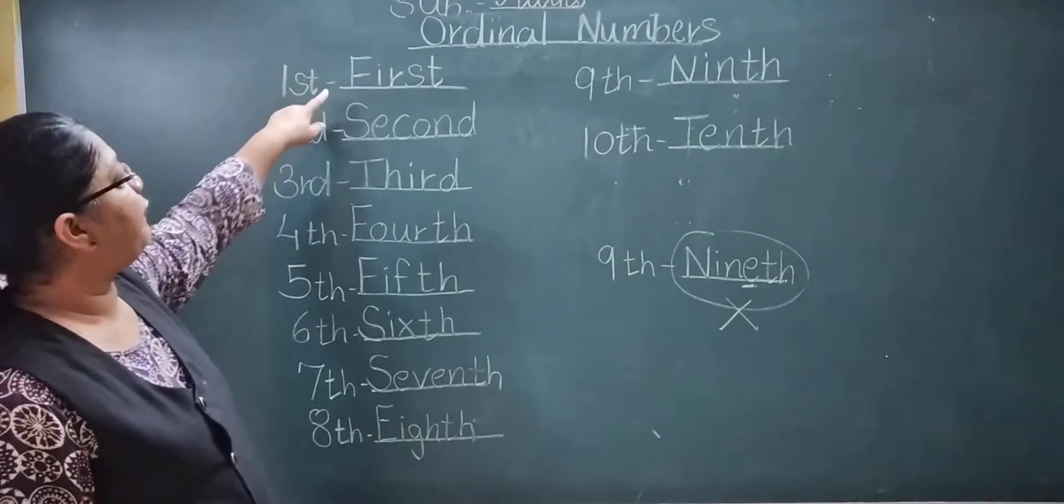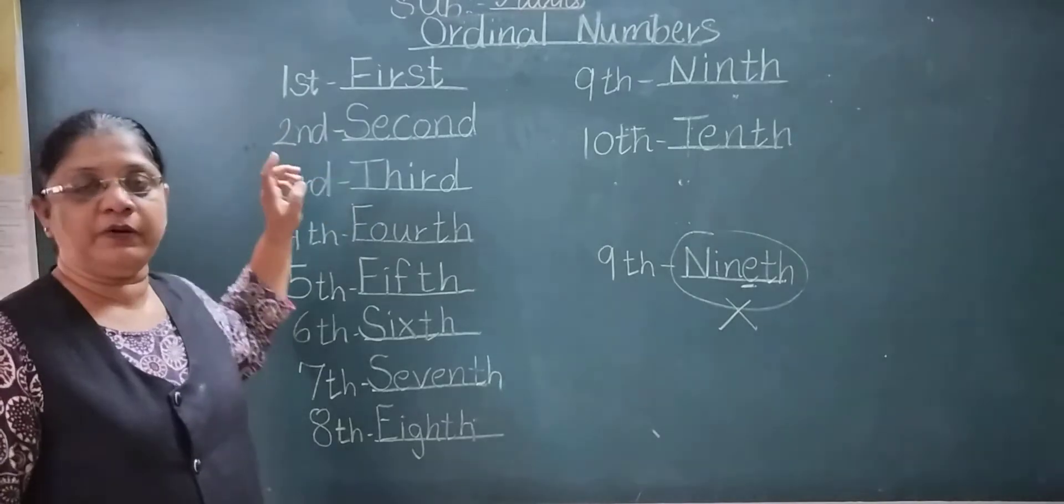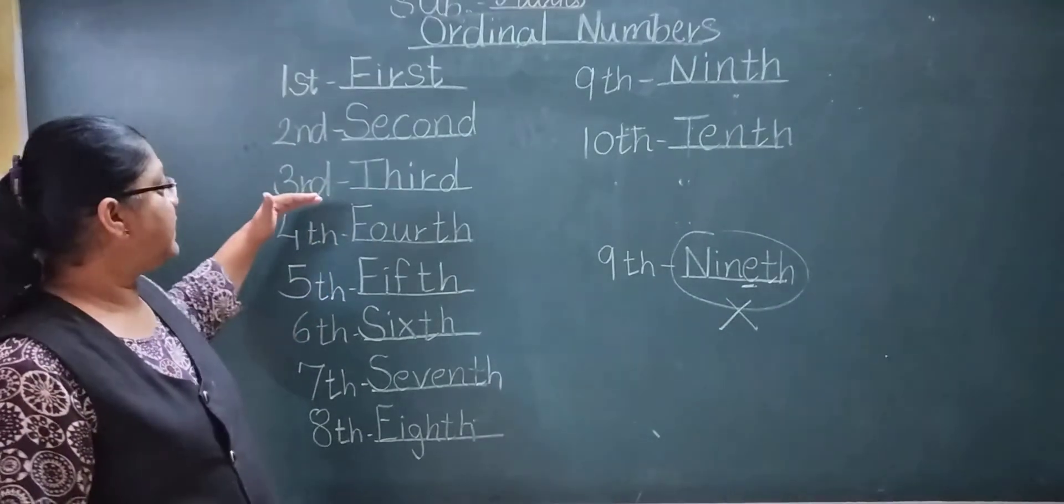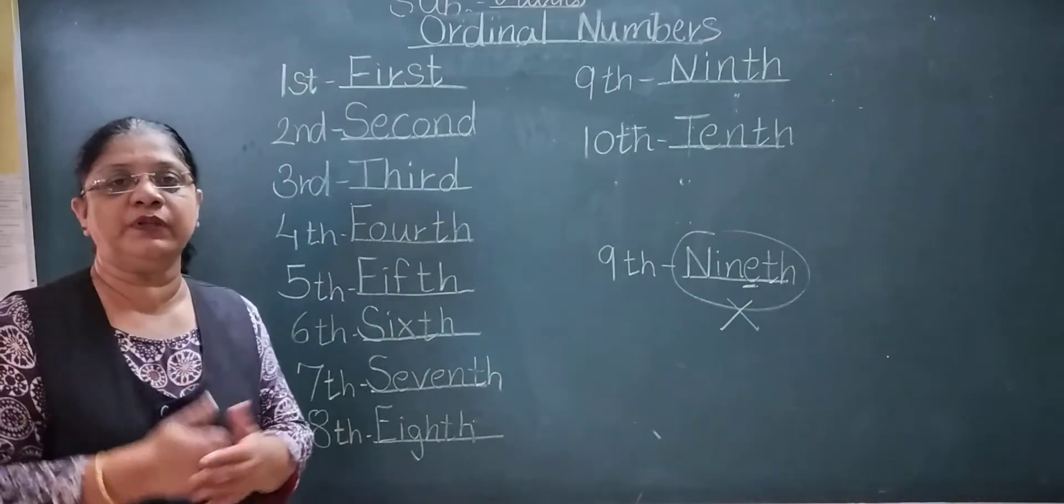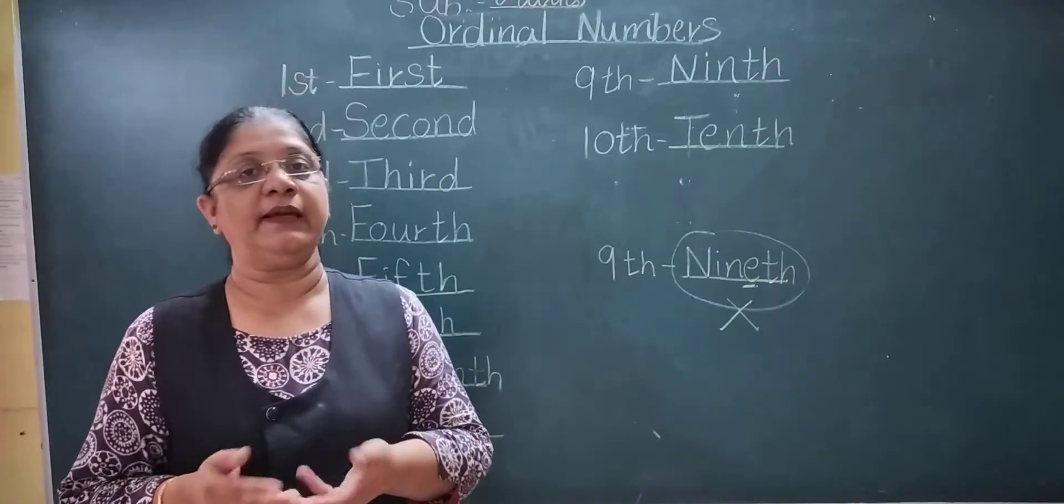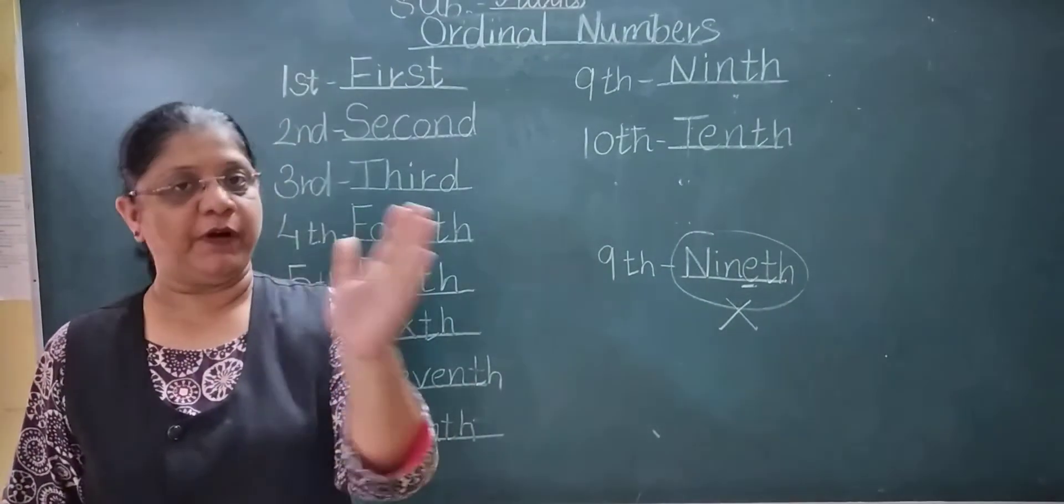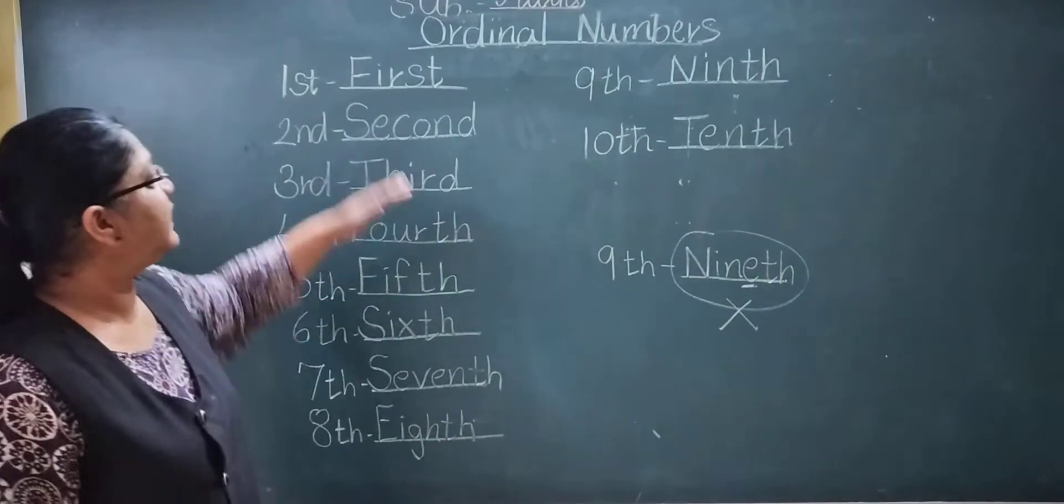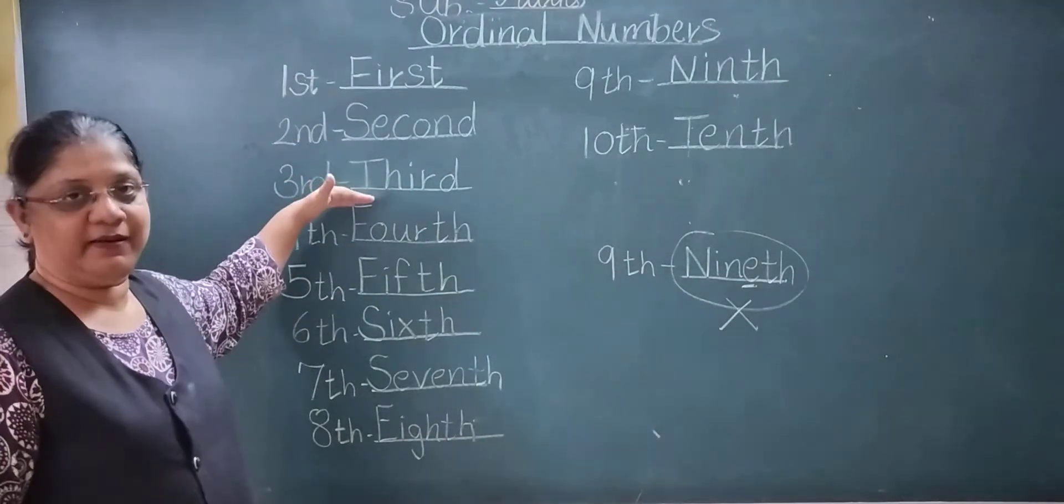See here, first, second, third, these three ordinal numbers are different. Otherwise, four converts, already you know the spelling. Four, six, seven, eight, nine, you just put TH in front of this spelling. Only these three spellings you just write.